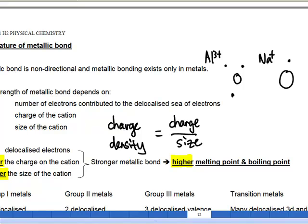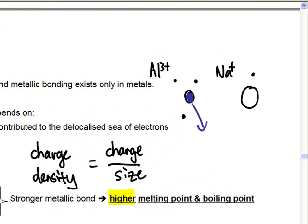So aluminum will have a total of three positive charge. But for your sodium, the charge is not so concentrated. I only have a one plus charge and it's diffused throughout the larger sodium plus ion.